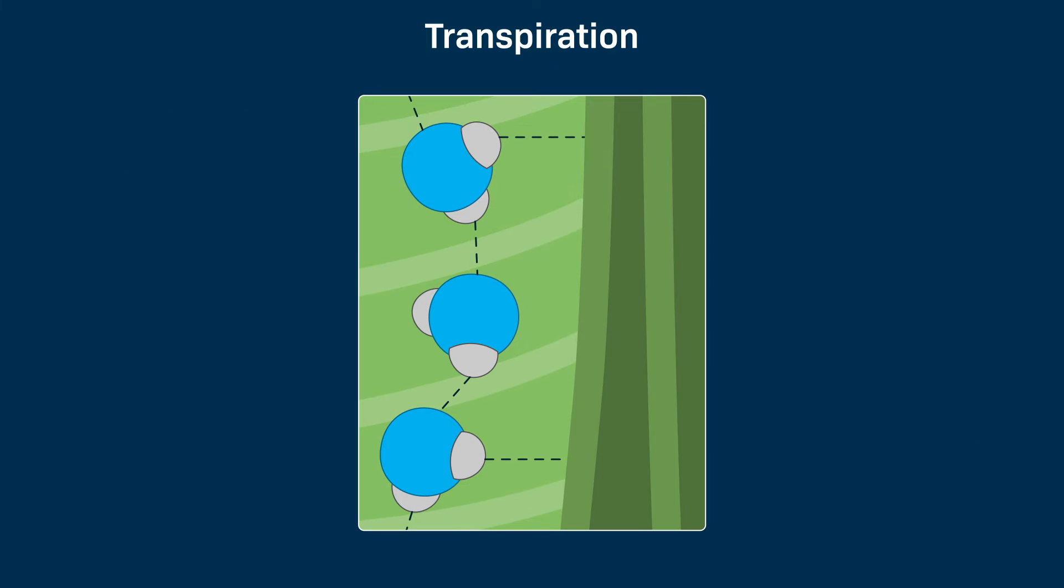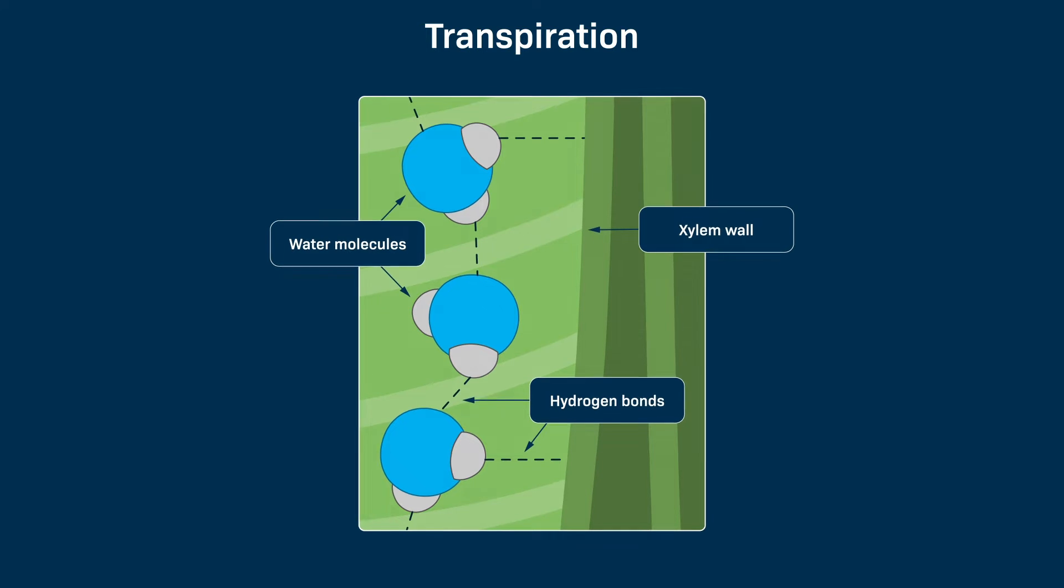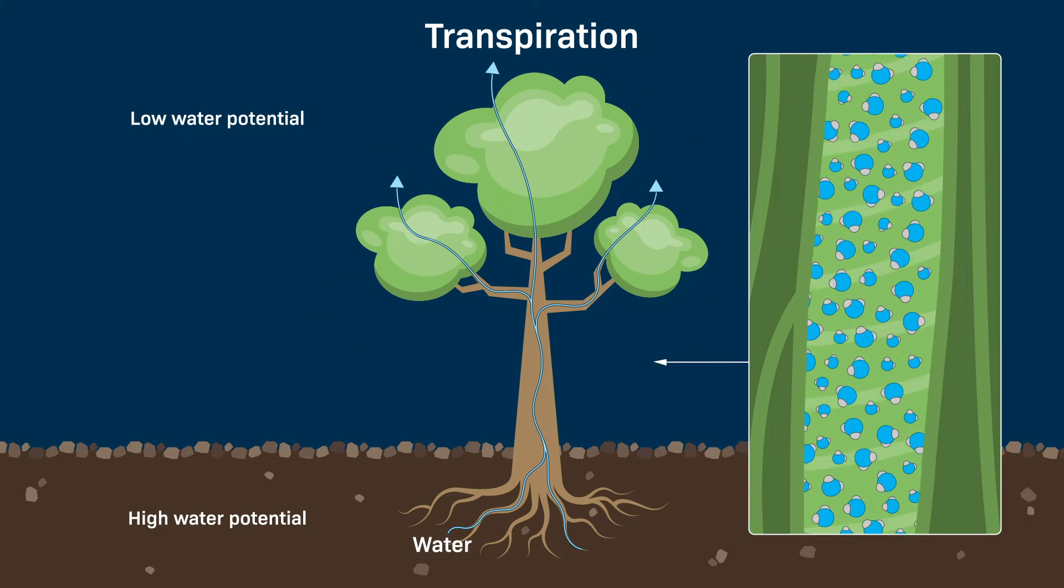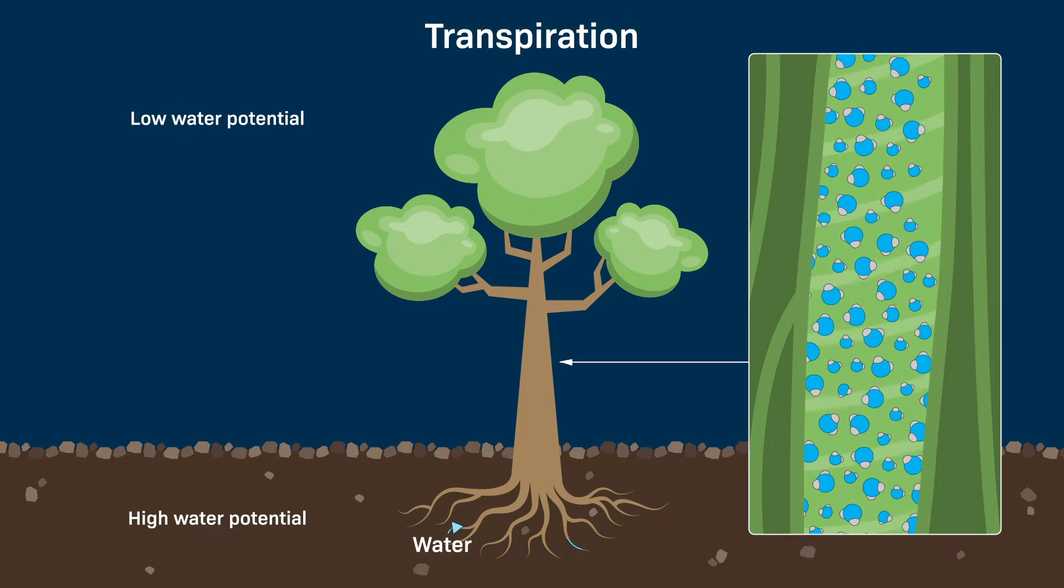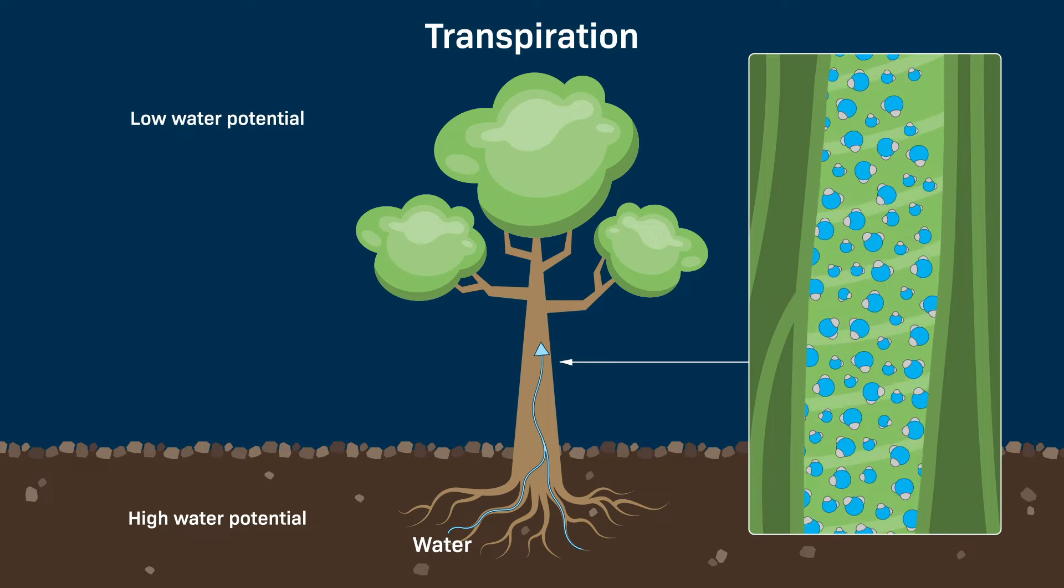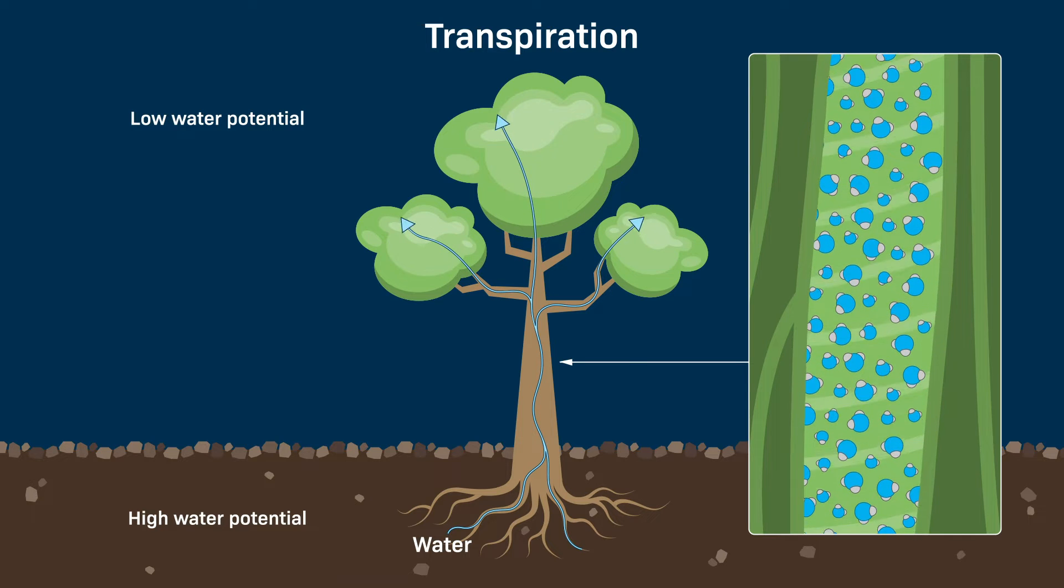Transpiration also happens because water molecules stick to each other and to the walls of the xylem through hydrogen bonding. That means they form a continuous column of water in the vascular cells from the roots to the canopy, and this column is constantly being drawn upward due to the low water potential in the air outside the stomata.